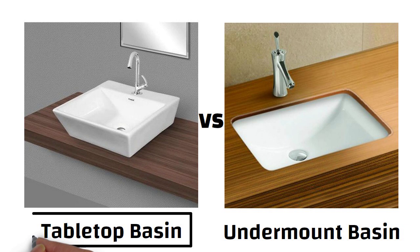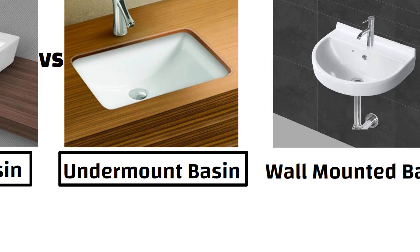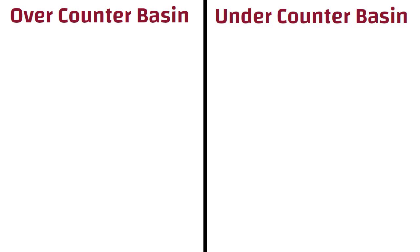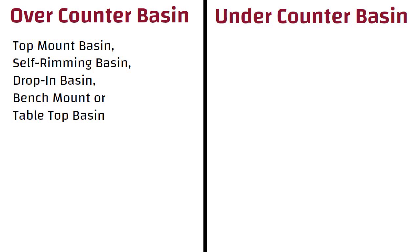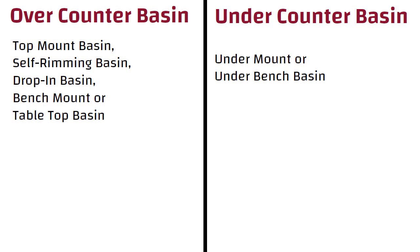In this video, we will discuss the differences between over counter basin and under counter basin. Over counter basin is also known as top mount basin, self-rimming basin, drop-in basin, bench mount basin or table top basin. Whereas under counter basin is also known as under mount or under bench basin.